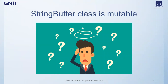String buffer supports a modifiable string. As you know, the string class represents a fixed length immutable character sequence. In contrast, string buffer represents growable and writable character sequences. String buffer may have characters and substrings inserted in the middle or appended to the end. String buffer class will automatically grow to make room for such additions and often has more characters pre-allocated than are actually needed to allow room for growth.